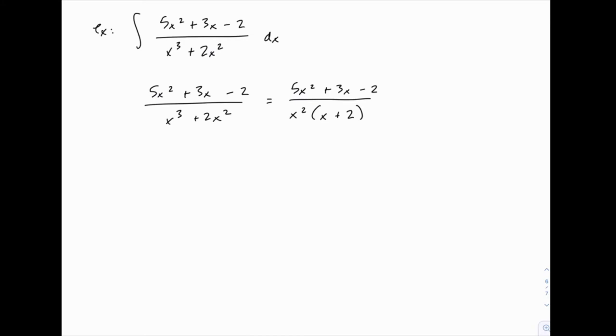Now we can write down the form of the partial fractions. Notice that we have x + 2, and then we have a repeated factor x. That's not a quadratic factor, it's just a repeated linear factor x. So we can write this as A/x + B/x² + C/(x + 2).